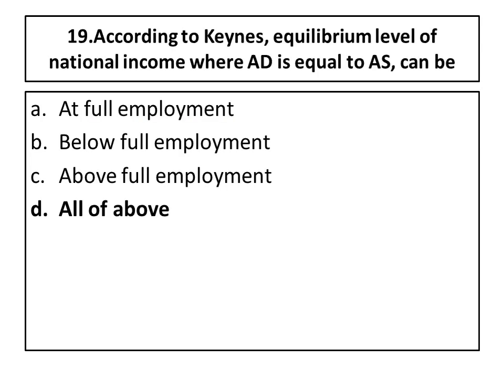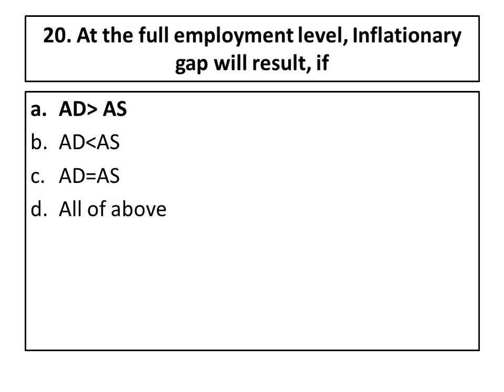Nineteenth question: according to Keynes, the equilibrium level of national income is where aggregate demand equals aggregate supply. This situation of equilibrium level of national income can be at full employment, below full employment, or above full employment. The right answer is D — all of the above — because according to Keynes this equilibrium level can be at, below, or above the full employment level.